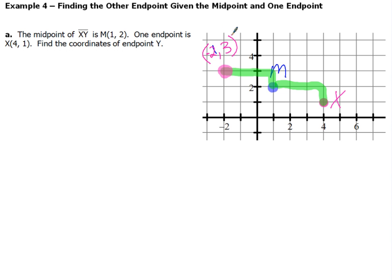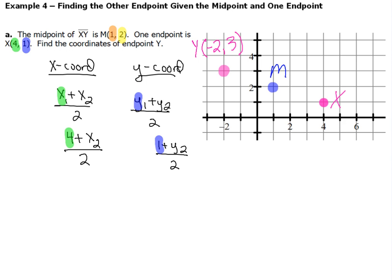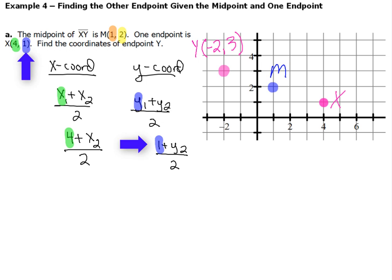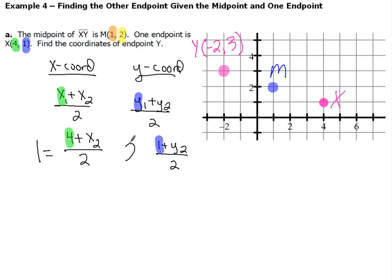So that's the coordinates I come up with for my other endpoint Y from a graphical perspective. Now let's take a look at this from an algebraic perspective. I'm going to take my midpoint formula and split it into two separate pieces — one dealing with my x-coordinates and one dealing with my y-coordinates. I already know the coordinates for the point that I'm given, point X. So I'm going to substitute 4 in for x1 and 1 in for y1. Then I substitute 1 for the x-coordinate side and 2 for the y-coordinate side of the midpoint.